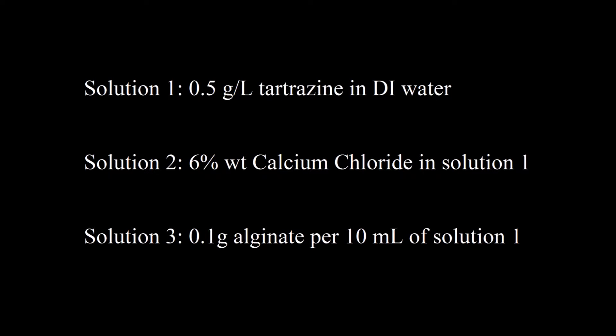There are three solutions that need to be made for this experiment. The first solution consists of 0.5 grams per liter tartrazine in distilled water. The second is 6% by-weight calcium chloride solution mixed in with 0.5 grams per liter tartrazine with distilled water. Solution 3 is 0.1 grams of sodium alginate dissolved in 10 milliliters of 0.5 grams per liter tartrazine solution.